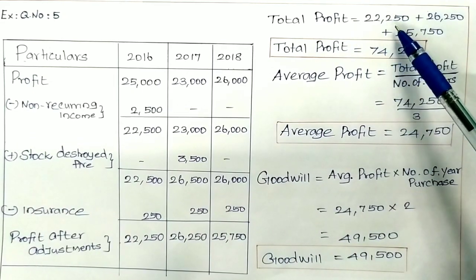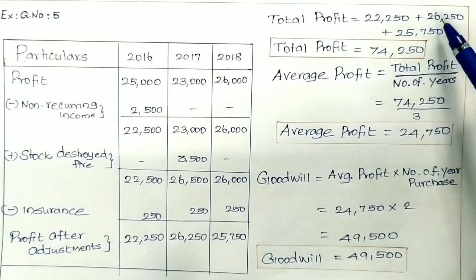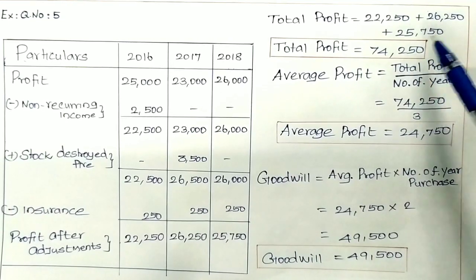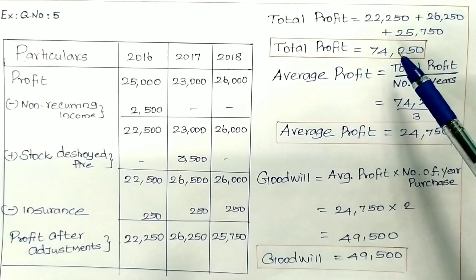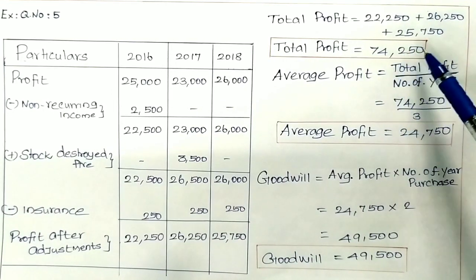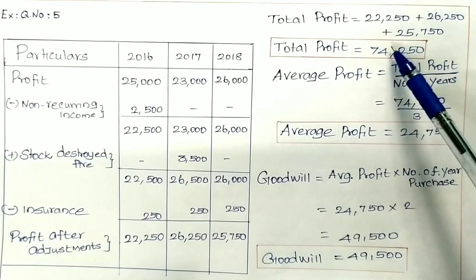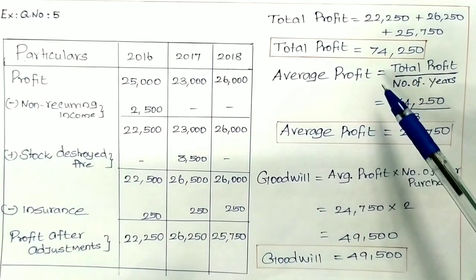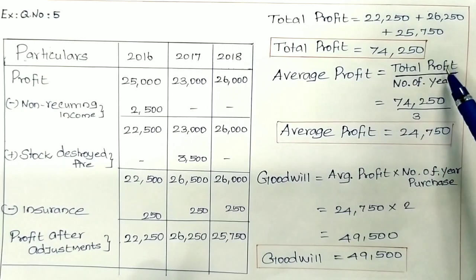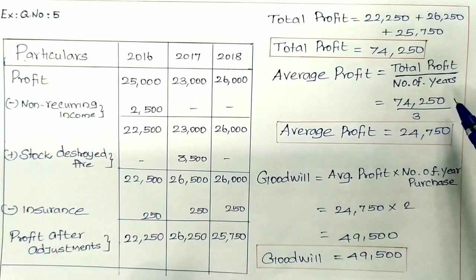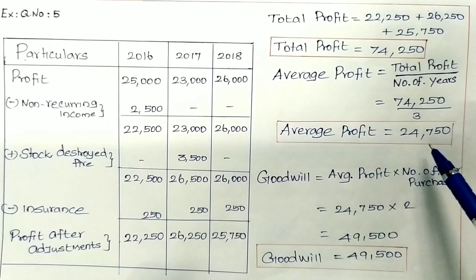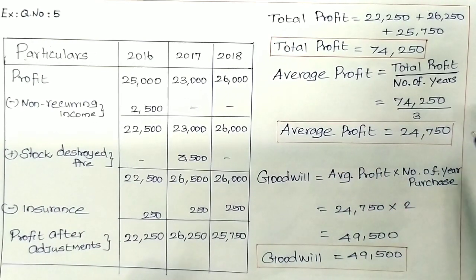Total profit = 22,250 + 26,250 + 25,750 = 74,250. Average profit = Total profit divided by number of years = 74,250 ÷ 3 = 24,750.